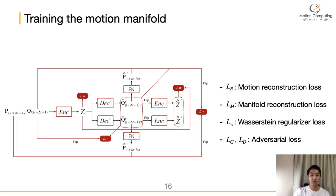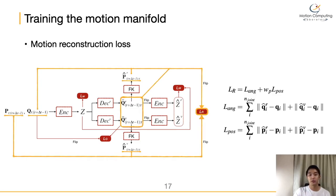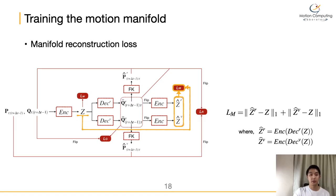Let's see the motion reconstruction loss in detail. Yellow arrows indicate the data used for the motion reconstruction loss term. The motion reconstruction loss penalizes the difference between the original motion and the reconstructed motion, which is obtained by encoding the motion followed by decoding. Specifically, we measure the discrepancies of both joint rotation angle Q and joint position P. Another reconstruction loss is the manifold reconstruction loss: a latent code sampled from the latent distribution should be reconstructed after decoding and encoding, and this loss enforces the mapping between the motion and the manifold space.